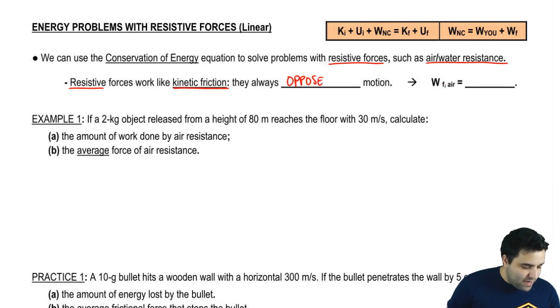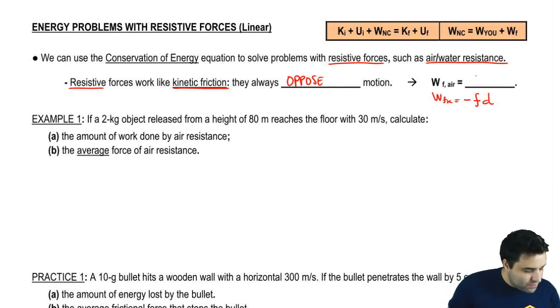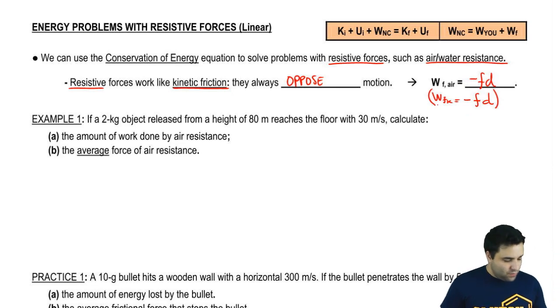The work done by kinetic friction, if you remember, we could have simplified that as negative friction times D. And we can do the same thing for all these resistive forces. So it's just going to be negative F times D, just the same. So the work done by any resistive force is negative F times D, where D is the distance.